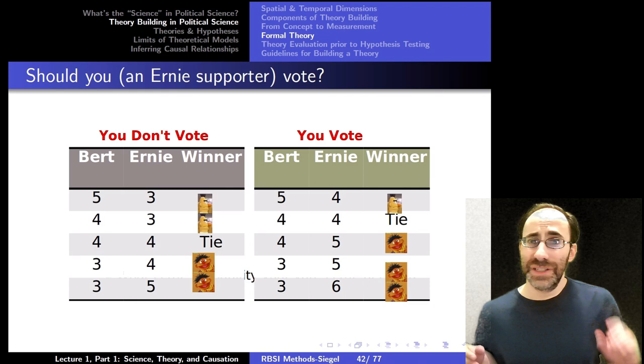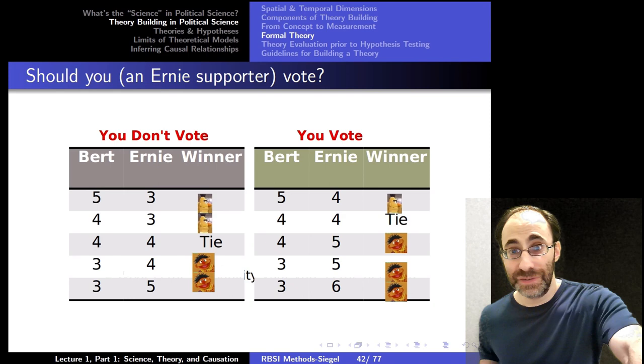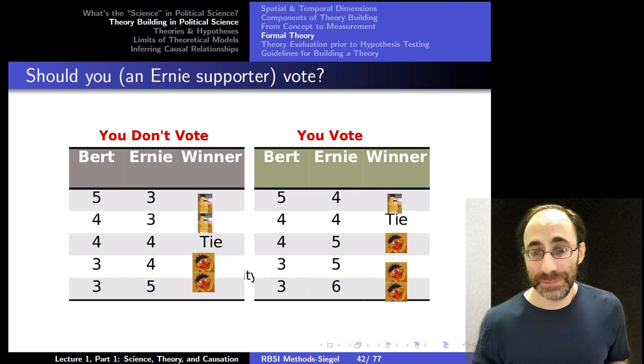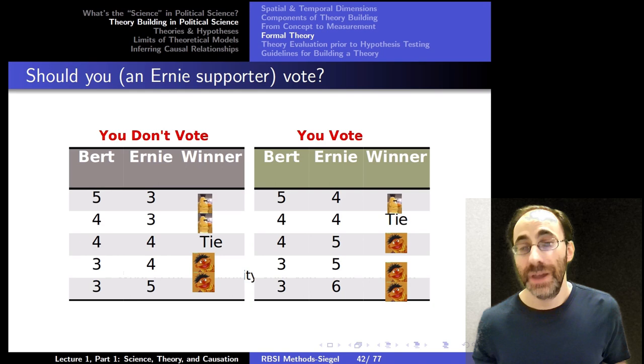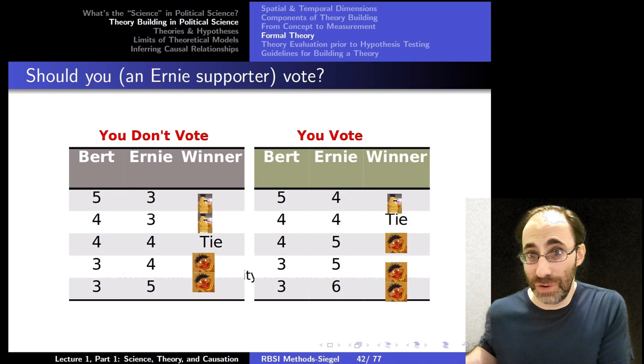We're going to focus on that first one, that you actually have an influence over government policies. In a fairly silly example, here's an election between Bert and Ernie. On the left column, we have a situation that happens if you don't vote. On the right, a situation where you do vote. Let's assume you're an Ernie supporter. So you want Ernie to win. In the first row, Bert gets five votes, Ernie gets three. If you don't vote, the winner is Bert. If you do vote, the winner is still Bert. So your vote didn't have an actual effect. In political science terms, we say you're not pivotal. Your vote didn't change the election itself.